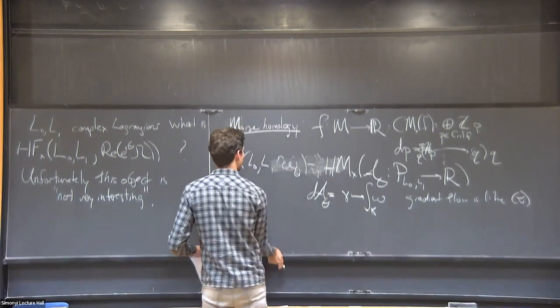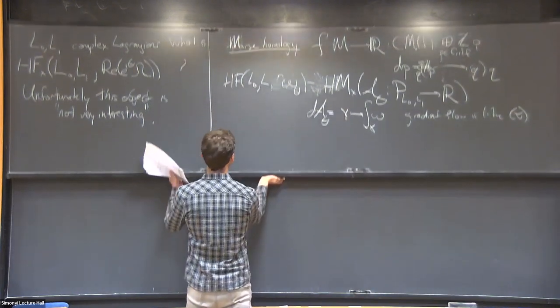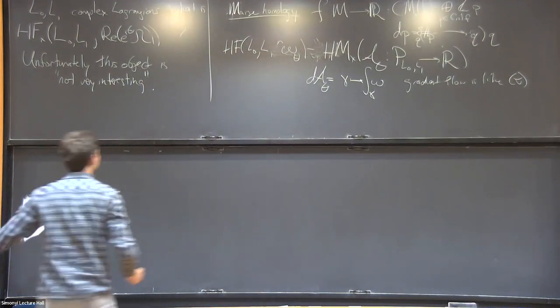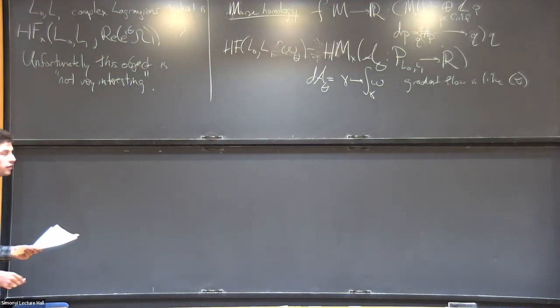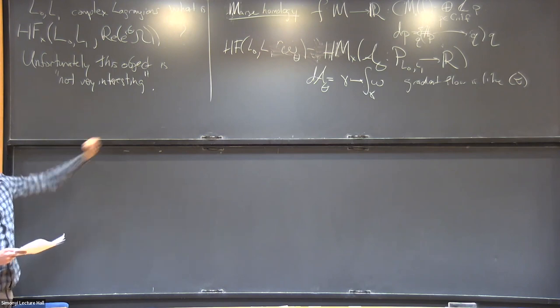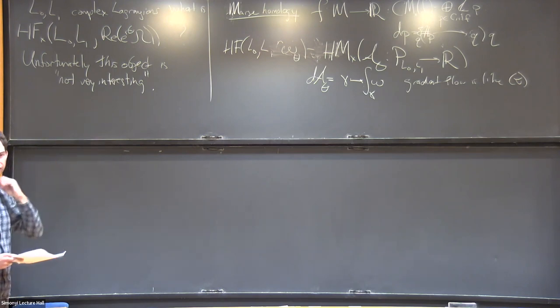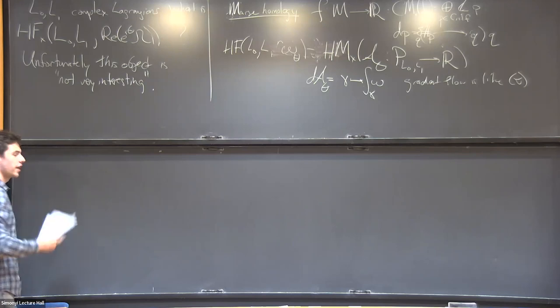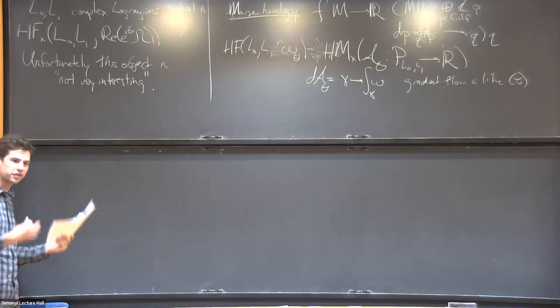That's what this invariant is supposed to be. In general, it's pretty interesting. It turns out that this gradient flow is like this equation. If the Lagrangians intersect transversely, then the Morse function is non-degenerate on the path space, and that's an easy calculation. In general, there's some kind of perturbation scheme you have to do.